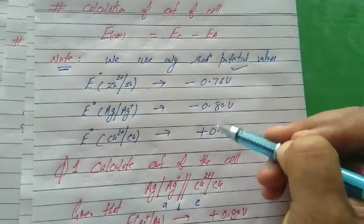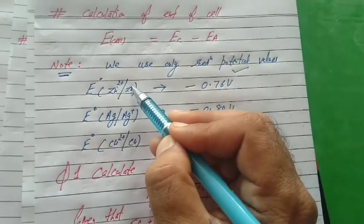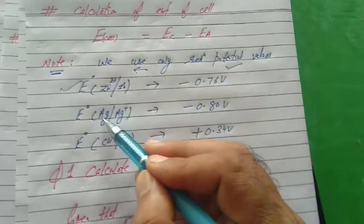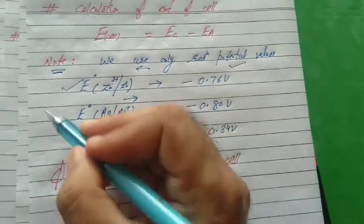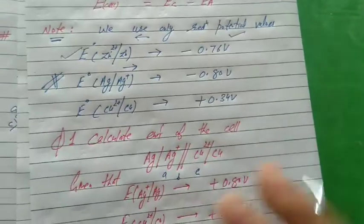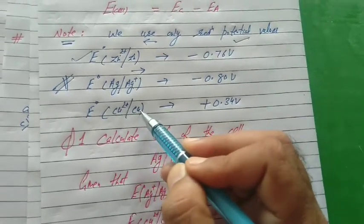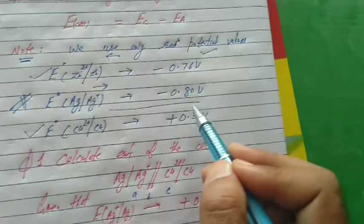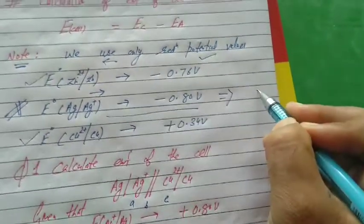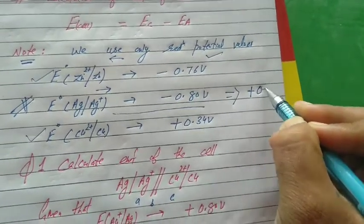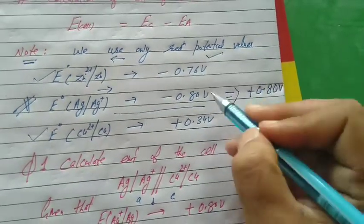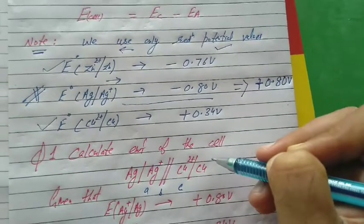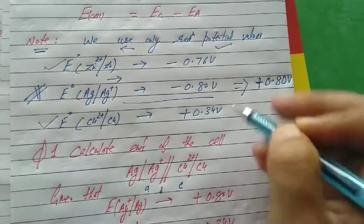If Ag changes to Ag⁺, the oxidation number increases — that means it is oxidation potential. But we must use only reduction potential, so we change the sign: the reduction potential is the same value but with opposite sign. If oxidation potential is given in the question, change the sign; otherwise use the value as given.